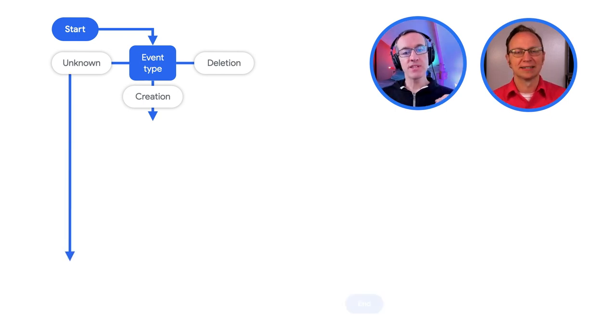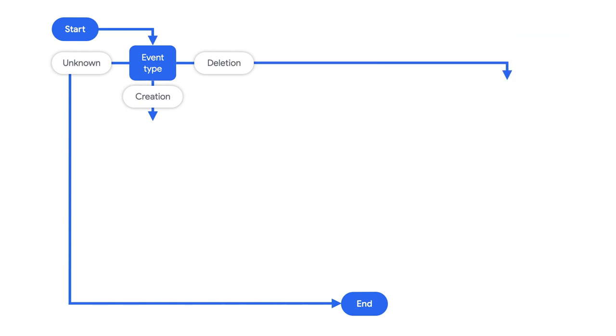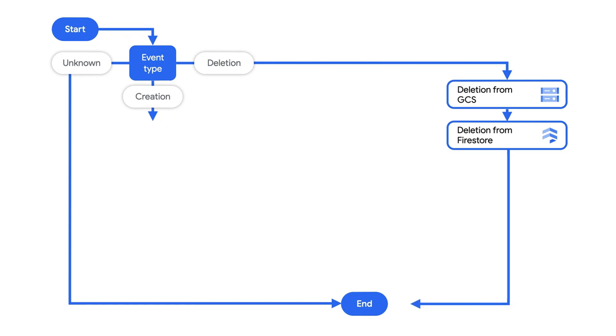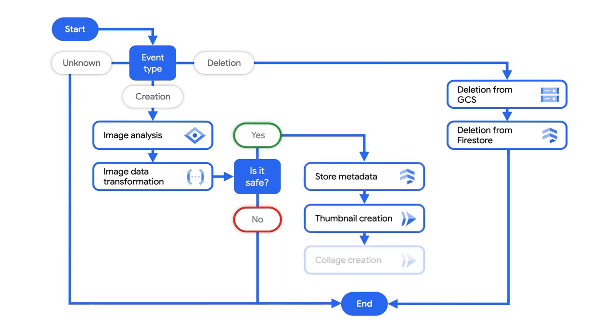If the file event isn't recognized, we'll go straight to the end of the workflow. If the file event is a deletion, we remove the thumbnail pictures from cloud storage as well as the picture metadata in Firestore. If it's a file creation event, we analyze the picture with machine learning from the Vision API and extract information about the labels, the color, whether it's safe or not to show the picture. If it's a picture safe to show publicly, we store the metadata in Firestore. We create the thumbnail and the collage. I see.